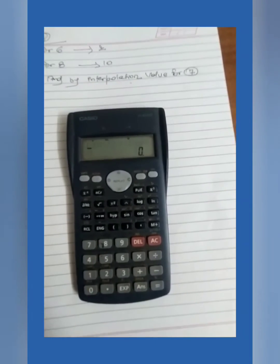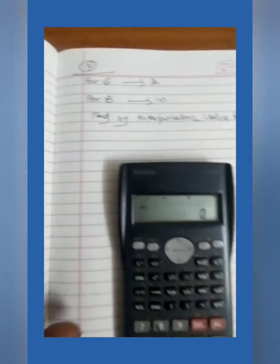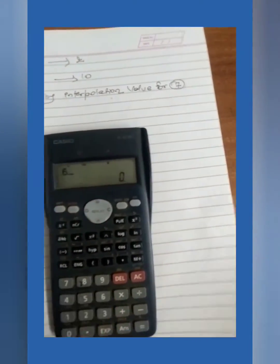We will press 1. Linear mein jaane ke baad we will type the data. For 6 its 2, so we will write 6 comma 2.